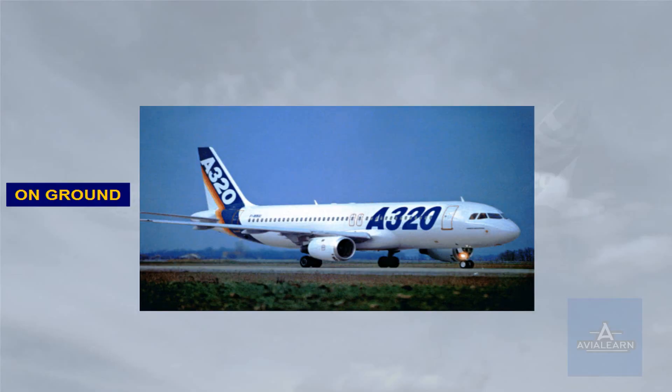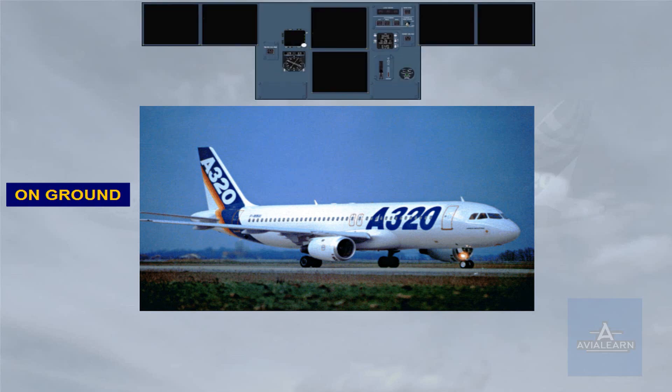On the ground, the DC BAT bus is automatically connected to the batteries. At low speed, the AC essential bus is shed, leading to the loss of all screens. Note, the APU can be started as soon as we are on the ground and the speed is below 100 knots.